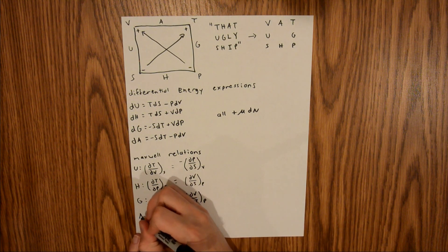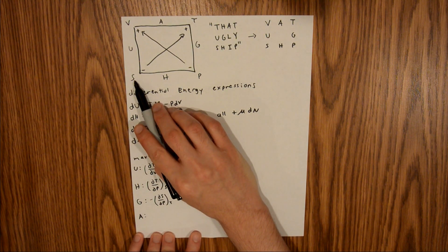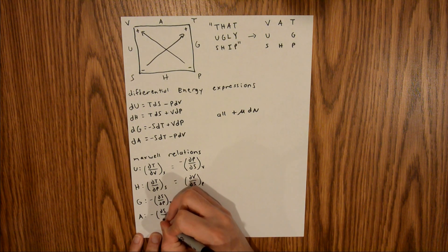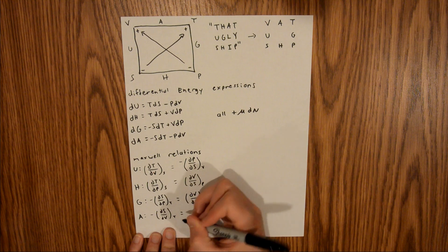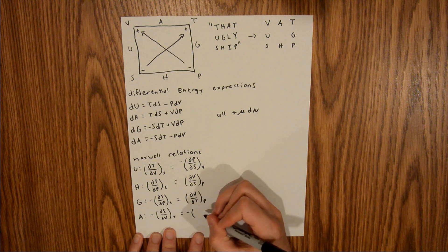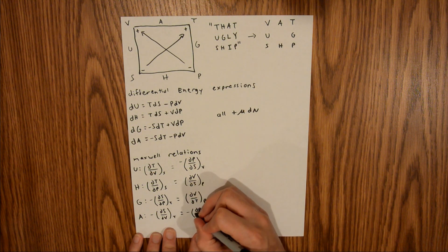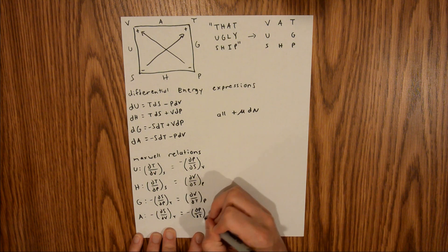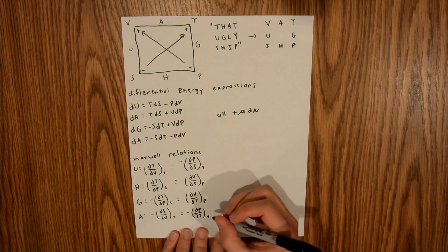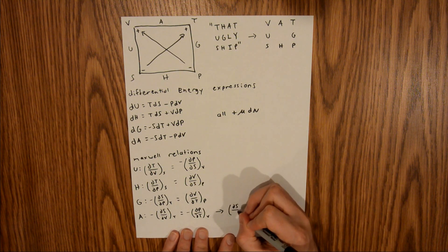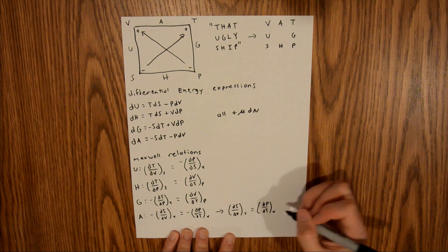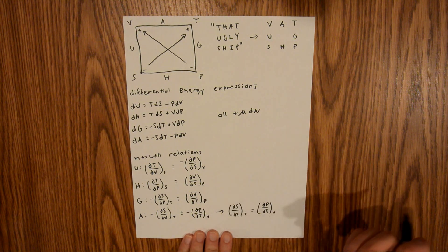And finally for our Helmholtz free energy: negative dS, dV at constant T equals negative dP, dT at constant V. Since you have a negative sign on both sides, you can cancel those out, giving you dS, dV at constant T equals dP, dT at constant V. And those are your four Maxwell relations.